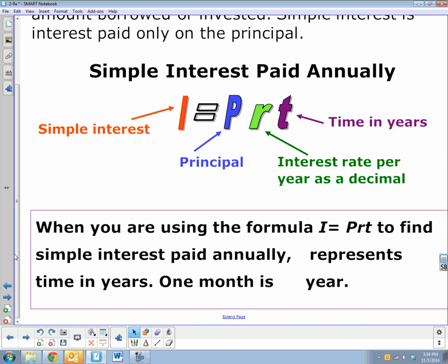So when you're using the formula I equals Prt to find simple interest paid annually, t represents time in years. But again, remember that we have to change our things in years. So if you have one month, one month is one-twelfth of a year. Two months is two-twelfths of a year. Six months would be six-twelfths of a year or half of a year. Nine months would be three-fourths of a year. And so you can look at months as fractions of a year, as one-twelfth of a year.